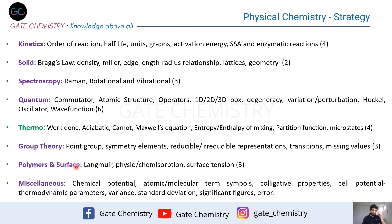For polymers, about one question appears on average per exam. For surface chemistry, about two questions appear, and they are highly predictable — mostly from Langmuir adsorption isotherm (both conceptual and numerical) and surface tension numericals. You can also do physisorption versus chemisorption. For polymers, since the syllabus is limited, practicing previous year questions and knowing the direct formulas should be sufficient.